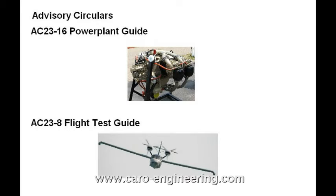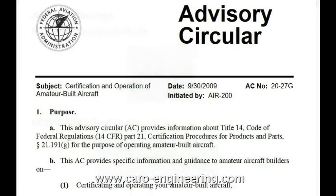If you live in the US and are building an experimental airplane, there is one AC that you have to read completely. It contains nothing directly related to airplane design. Instead, it takes you in detail through the regulatory process on how to get from a pile of airplane material to a flying machine with an airworthiness certificate. This is AC20-27, certification and operation of amateur-built aircraft.